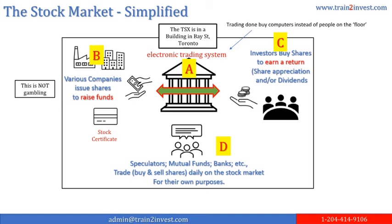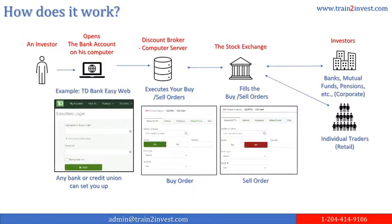Who are these investors? They are retail traders — that is, individual traders — or institutional investors such as banks, mutual funds, pension funds, etc. Letter D shows these investors. How does it work? From the chart, looking from left to right, you are the investor who can go to your bank and open a self-directed investment account for your RRSPs, TFSAs, etc. For further details, please enroll.